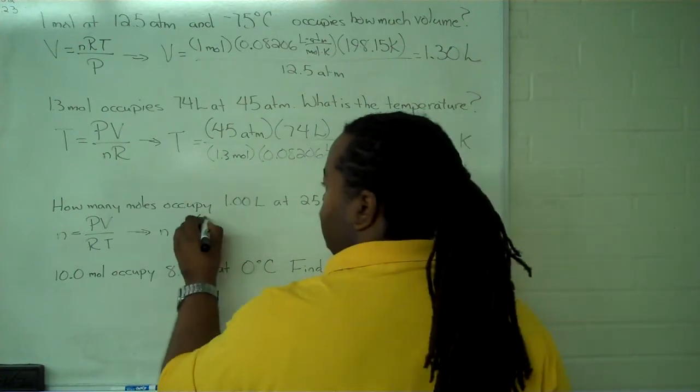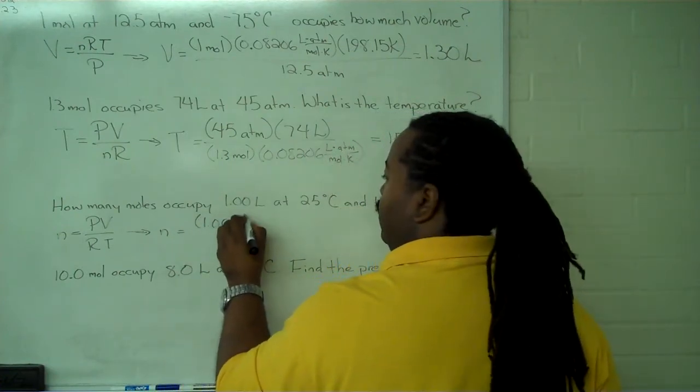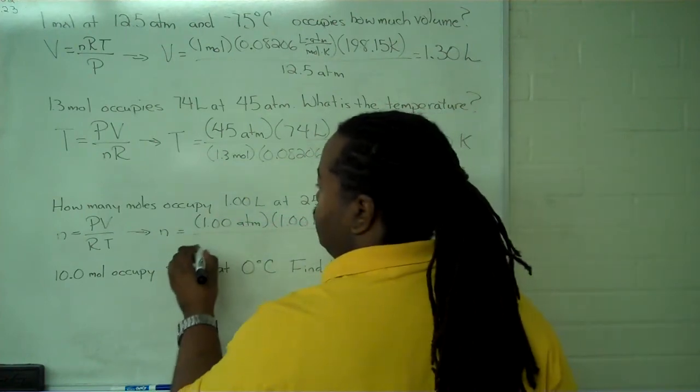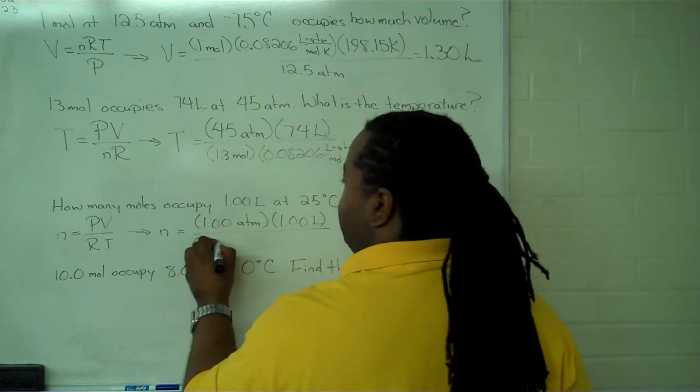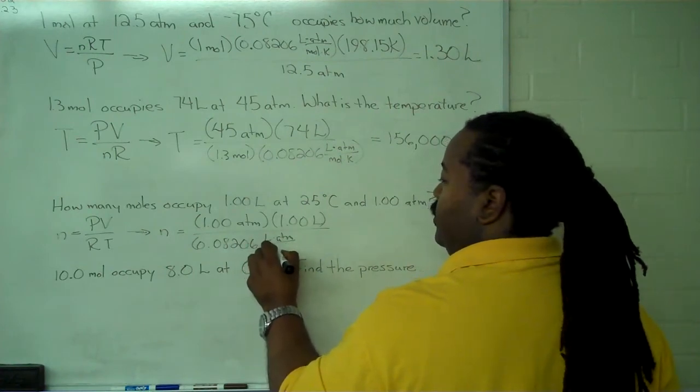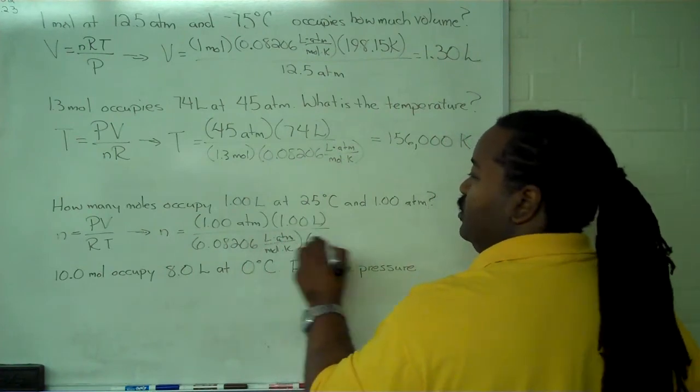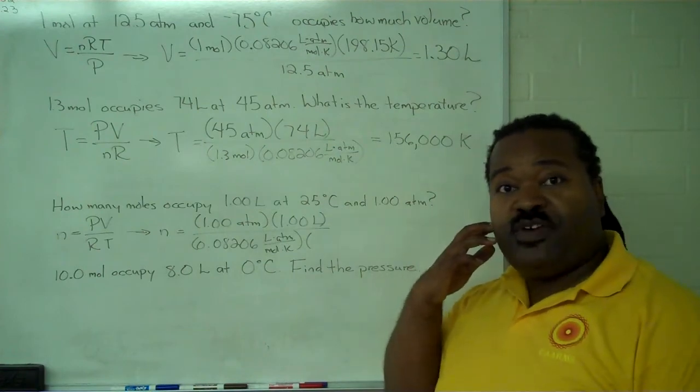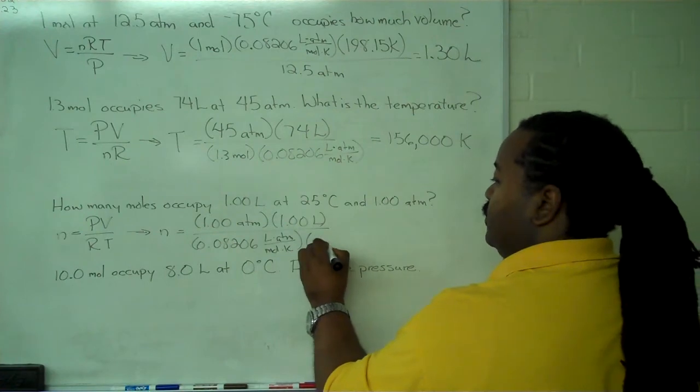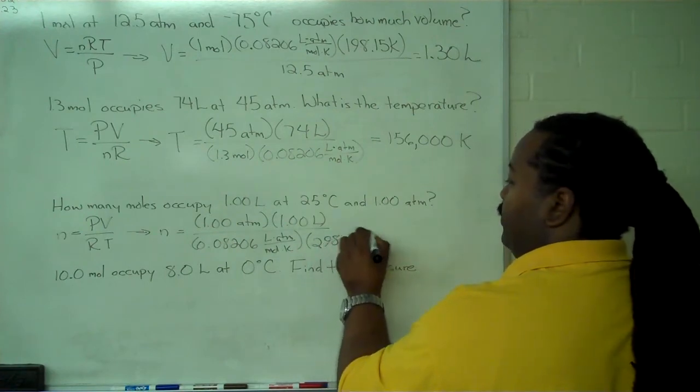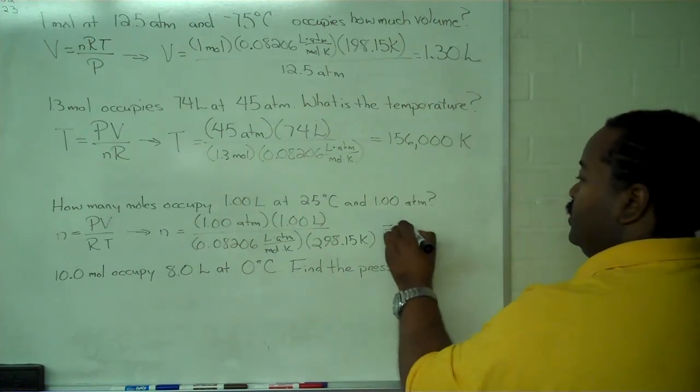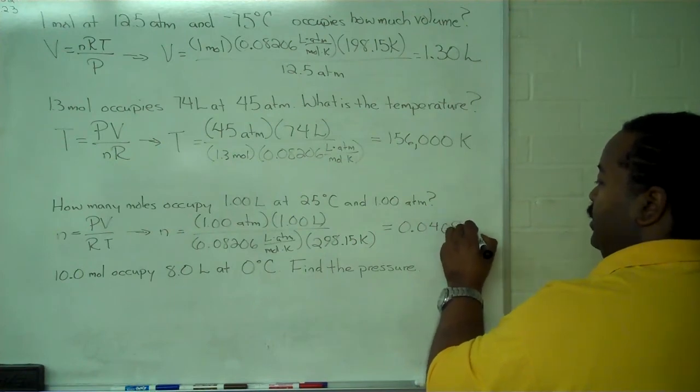And plugging in, we've got 1 atmosphere for our pressure, 1 liter for the volume, our gas constant, 0.08206 liter atmospheres per mole Kelvin, and then finally the temperature. Because it's 25 degrees Celsius, we have to convert that to degrees Kelvin, so we have 298.15. And when we simplify this all the way out, we get 0.0409 moles.